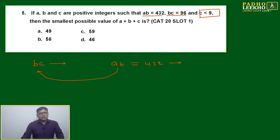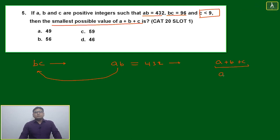So 432, in how many ways can we write it in the form of two-factor product? We'll apply a little bit of algebra concept. If you want to minimize any summation, a plus b plus c will be minimum if a equals b equals c. We know this method.